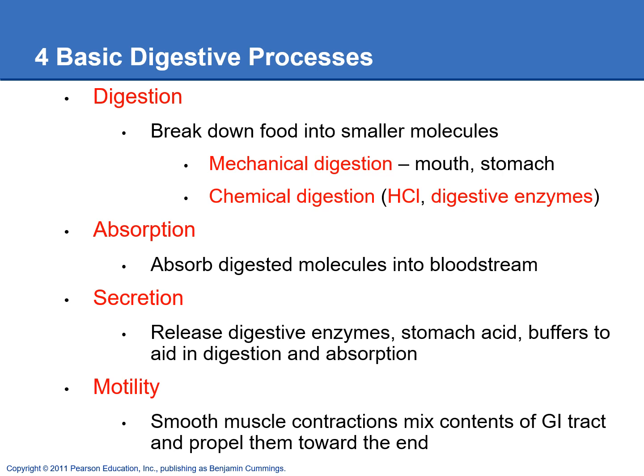There are four basic digestive processes that you need to know. The first one is digestion — we need to break down the food into smaller molecules so we can absorb them through the intestinal wall. There are two different types: mechanical digestion, where you're physically breaking down the food, like chewing in the mouth and churning in the stomach; and chemical digestion, where we use stomach acid and digestive enzymes to further break down food into smaller substances.